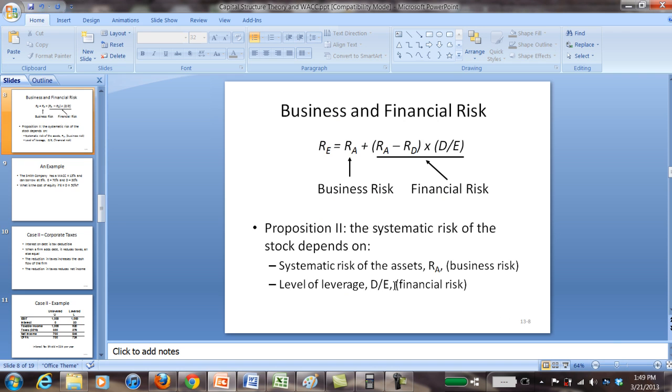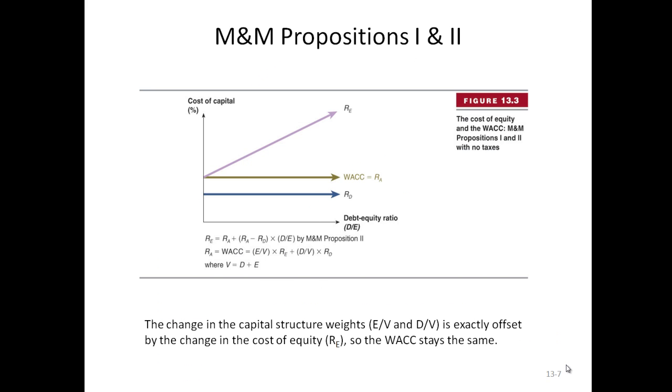So if we actually went back to this graph here, you can see that we moved, let's say, from here where the return to equity was 17.5 over to here where the return was 21 if you drew across. But what happened? The weighted average cost of capital stayed the same.